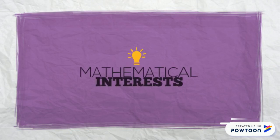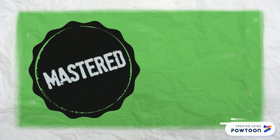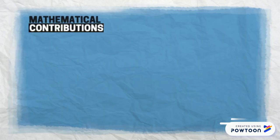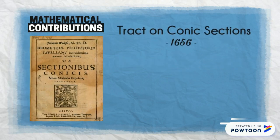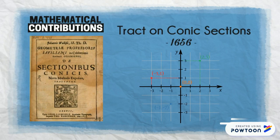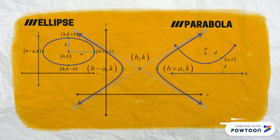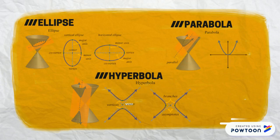Being able to finally indulge his mathematical interest, Wallis had a copy of William Oughtred's The Keys to Mathematics and mastered it in about a few weeks. He began to make his own mathematical contributions, such as work on conic sections, which is noteworthy for its use of Descartes' coordinate geometry. He identified the ellipse, parabola, and hyperbola with certain equations of the second degree, rather than treating them as curves generated by plane sections of the cone.